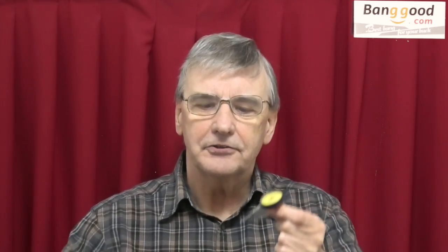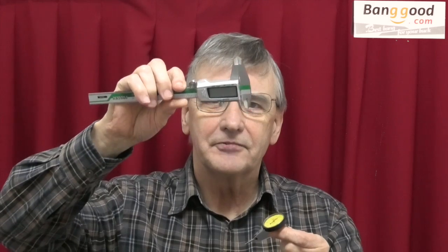But today we're looking at a tool review from Banggood. Two items, a dial indicator lever type and a digital caliper 6 inch. Let's go to the workshop and see how we do it.